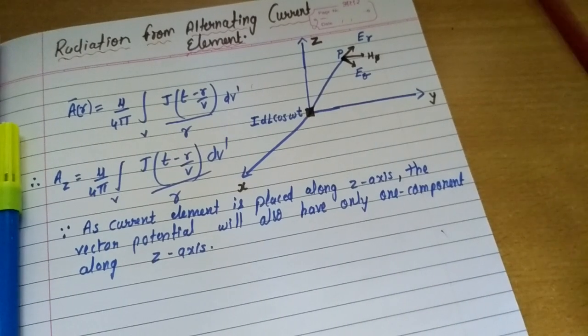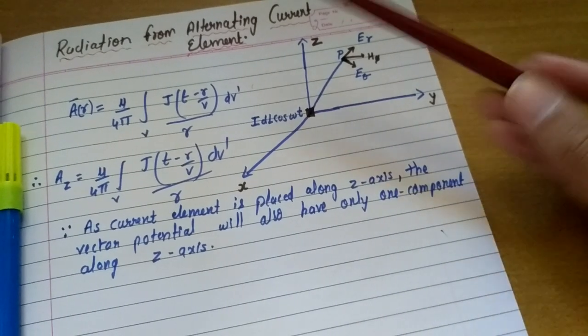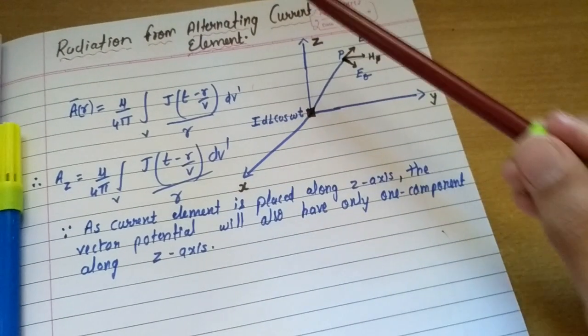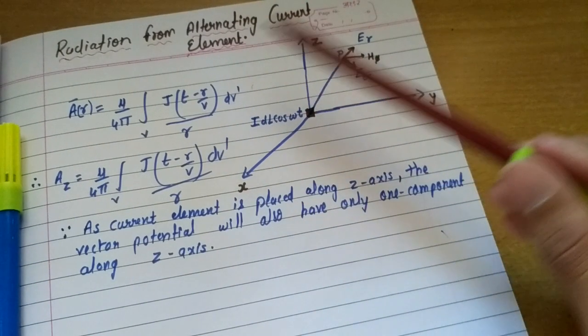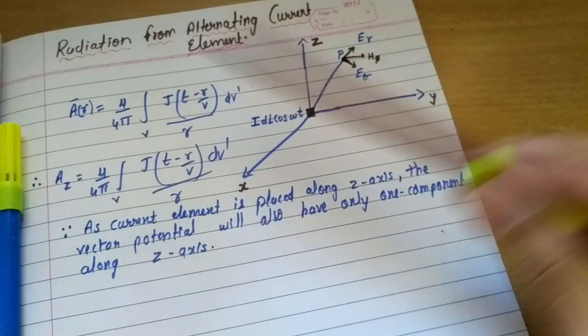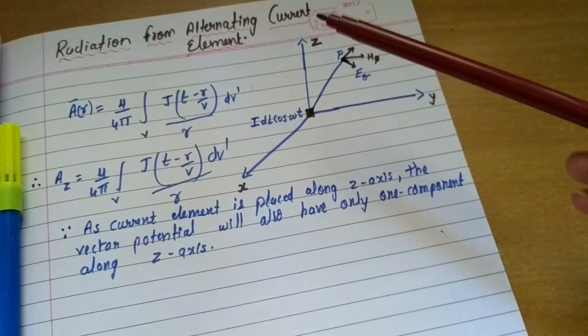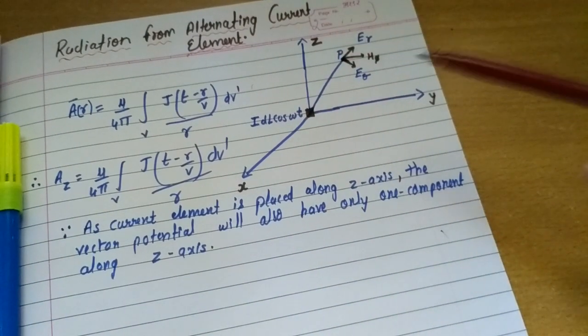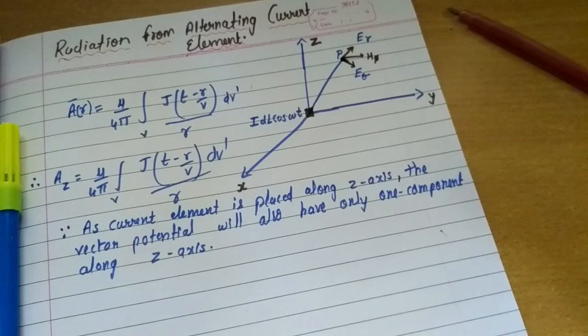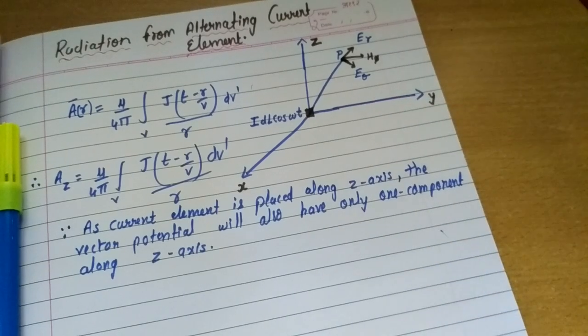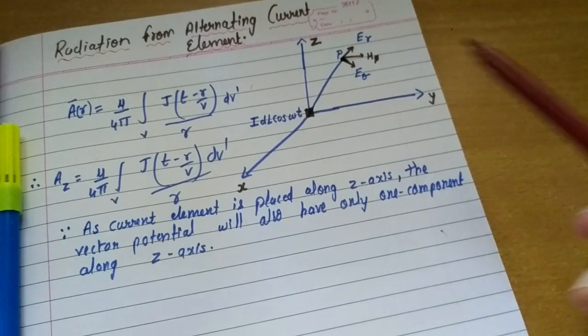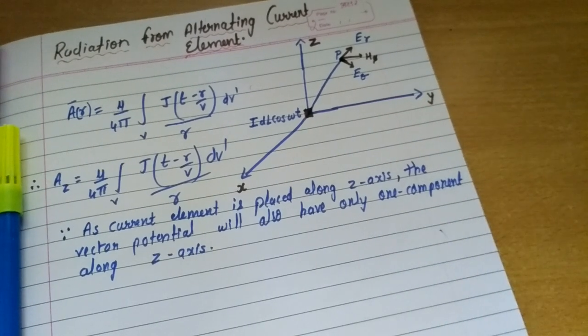Hello guys, in this video we are going to discuss one topic: radiation from a current element, that is, an alternating current element. This topic is under the subject Antenna and Wave Propagation. So let's start.